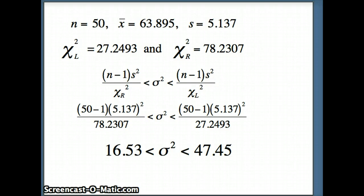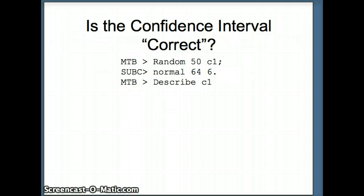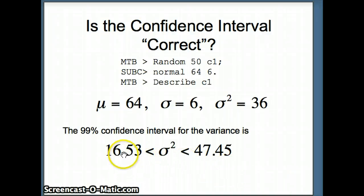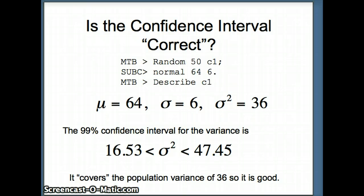That gives us our confidence interval for sigma-squared. Recall we generated data from a normal distribution with sigma equal to 6, so sigma-squared equals 36. Our confidence interval came out to be 16.53 to 47.45. The probability is 99% that this interval captured sigma-squared. Since we know sigma-squared is 36, and 36 falls between 16.53 and 47.45, the confidence interval is good — it covers the population variance of 36.